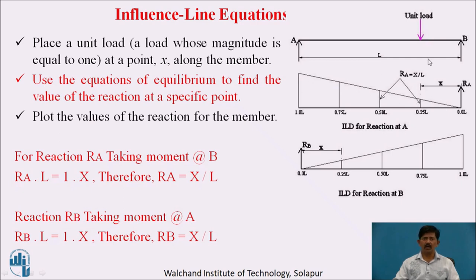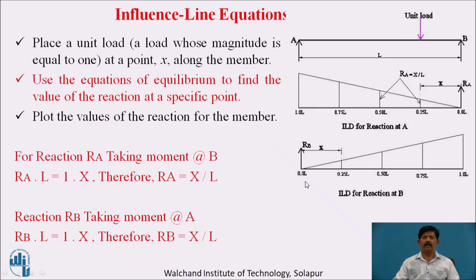Similarly, for ILD for RB, I consider the distance X from point A and take the moment about A. This gives RB × L = 1 × X, therefore RB = X/L. Again taking a load interval of 0.25L, I calculate RB and join the points to give the ILD for reaction RB.